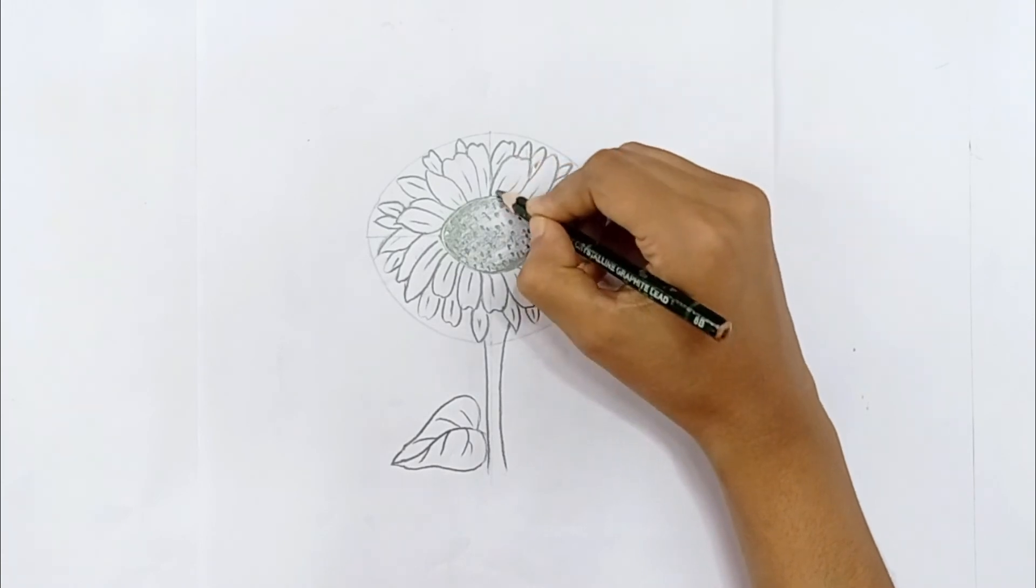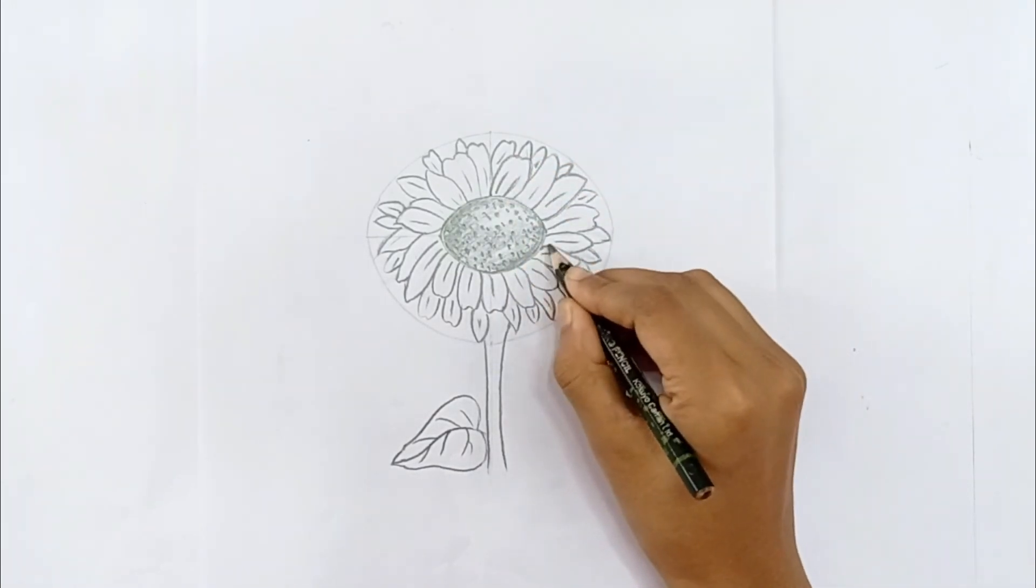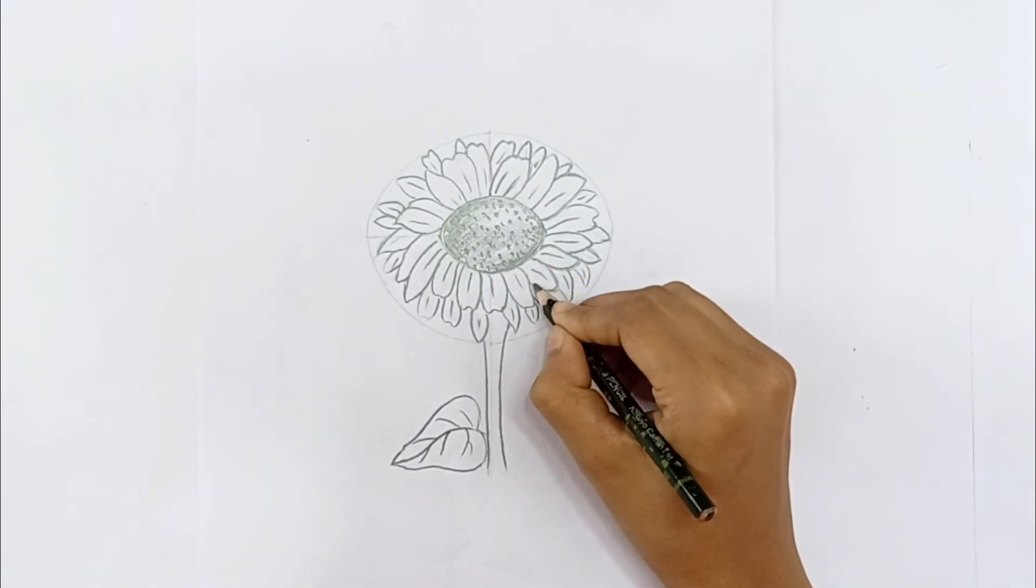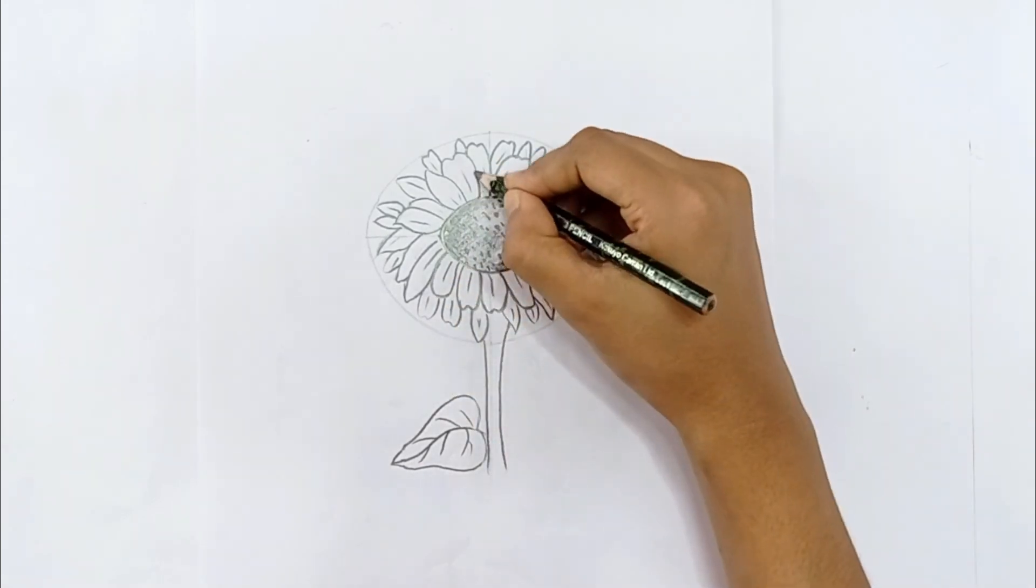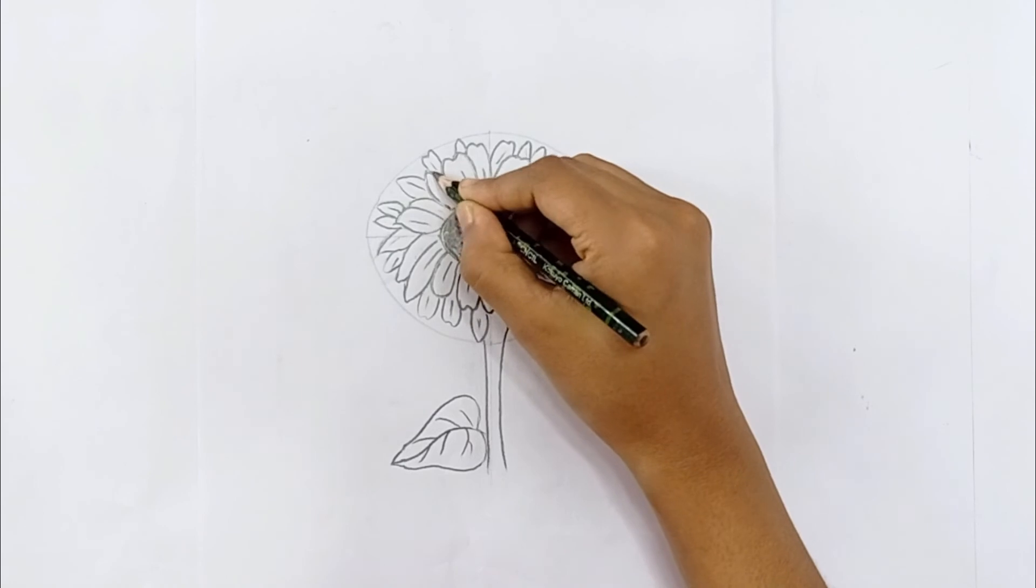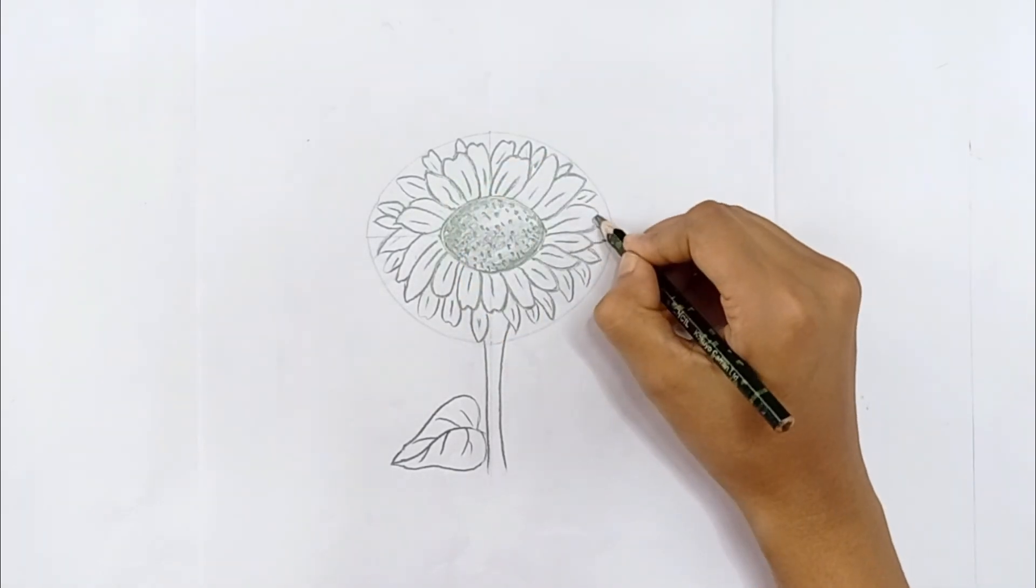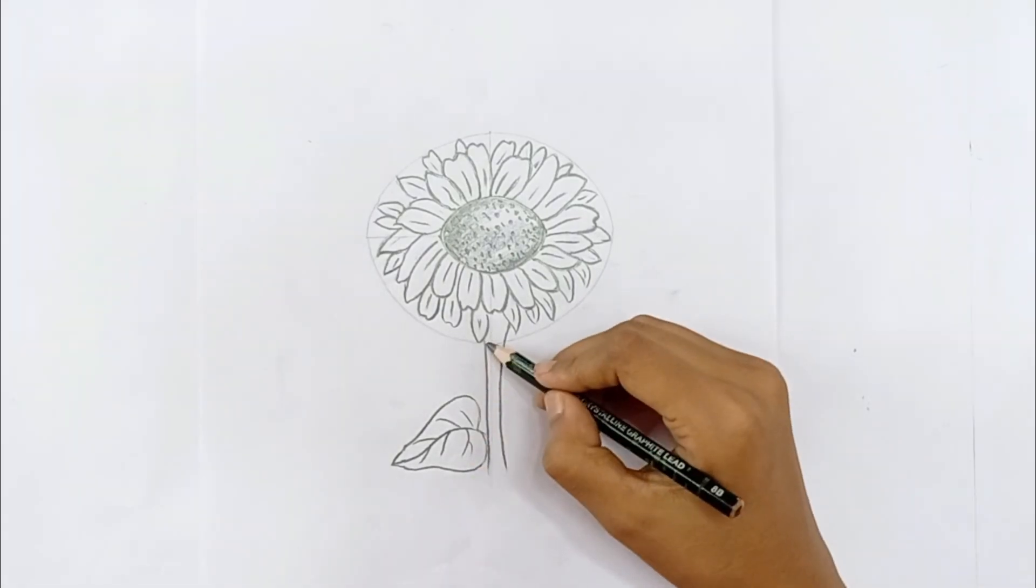This time we will darken some petals. Now I will do a light sketch of the leaf and the stick.